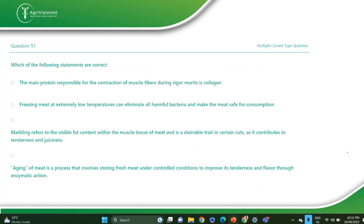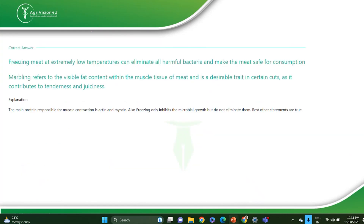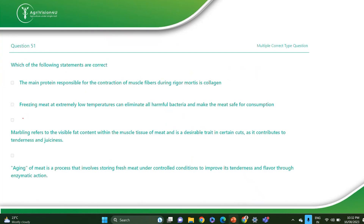The next question — MSQ type: which of the following statements are correct? Freezing meat at extremely low temperature will eliminate harmful bacteria and make meat safe for consumption. Marbling is the visible fat content within the muscle tissue of meat, which is desirable and contributes to tenderness and juiciness. These two statements are correct. B and C is the correct answer.